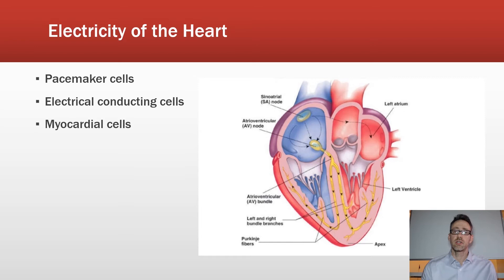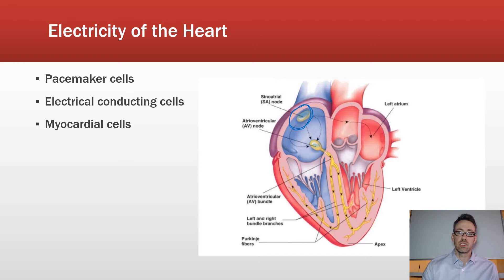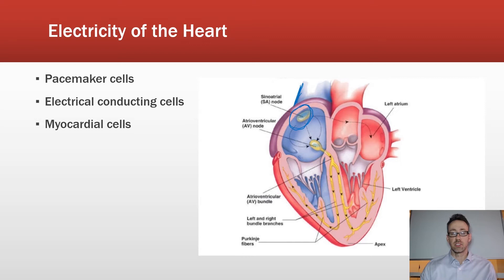The heart has two atria — left and right — and a left and right ventricle. There are pacemaker cells located in the sinoatrial node, which I'm circling here in blue. The sinoatrial node is located in the right atrium at the junction with the superior vena cava, and it keeps the pace of the heart at usually 60 to about 100 beats per minute.